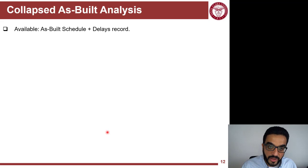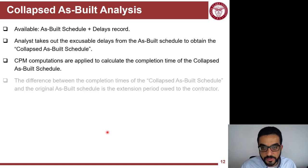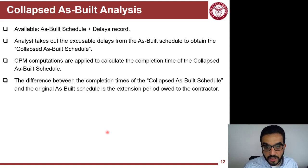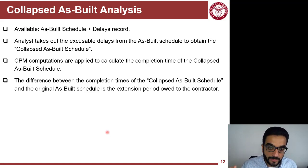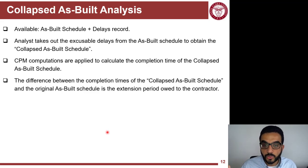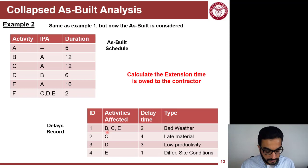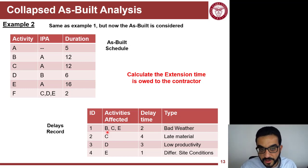The next method is Collapsed As-Built analysis. You need the as-built schedule and the records of delays. First, perform CPM calculations on the as-built schedule. Then remove the excusable delays from it — this collapses the as-built into the collapsed as-built schedule. Perform CPM calculations on the collapsed as-built, then calculate the difference between the total duration of the as-built and the collapsed as-built. That difference is the time extension owed to the contractor.